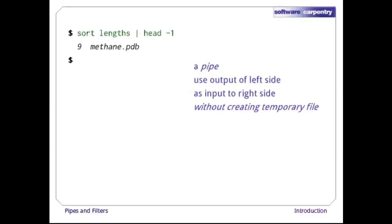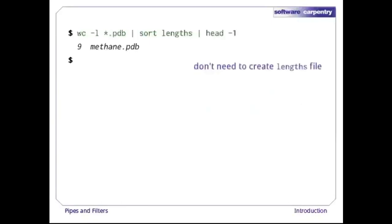The computer can create such a file itself if it wants to, or run the two programs simultaneously and pass data from one to the other through memory without ever putting it on disk. We don't have to know or care. If we don't need to create a temporary file sorted_lengths, can we get rid of the lengths file too? The answer is yes.